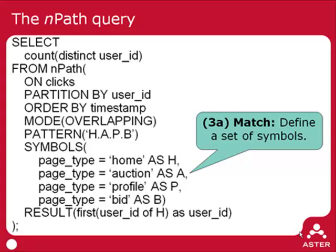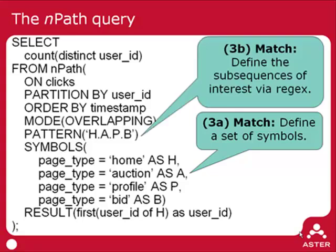Now that we've labeled all the clicks, we're going to do pattern matching over these labels. We want to find all sequences that follow the pattern: home, followed by auction, followed by profile, followed by bid. The way we do that is by stringing together the symbols using a regular expression. In this case, the regex is H.A.P.B.